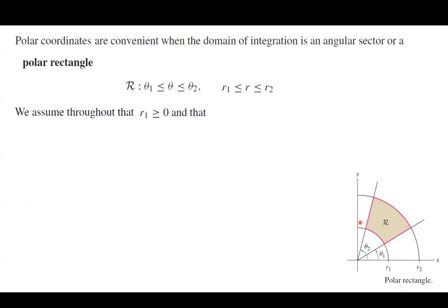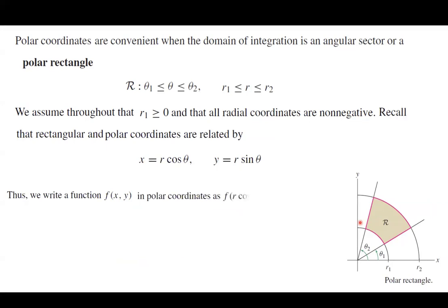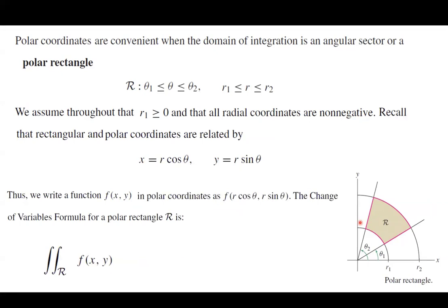We assume that R sub 1 is positive and all radial coordinates are non-negative. Recall that rectangular and polar coordinates are related by X equals R cosine theta, and Y equals R sine theta. So we write a function f of x and y in terms of R and theta as f of R cosine theta and R sine theta. Then the change of variables formula for a polar rectangle R is the double integral over region R of f of x and y dA, which becomes the integral of f of R cosine theta and R sine theta.